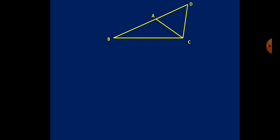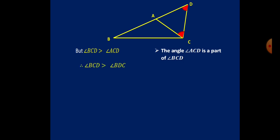From the previous slide, the red angle ACD and the red angle BDC are equal. But from the picture, BCD is greater than ACD, as angle ACD is part of angle BCD. Again, BCD is greater than BDC because ACD and BDC are equal, as proved in the previous slide.